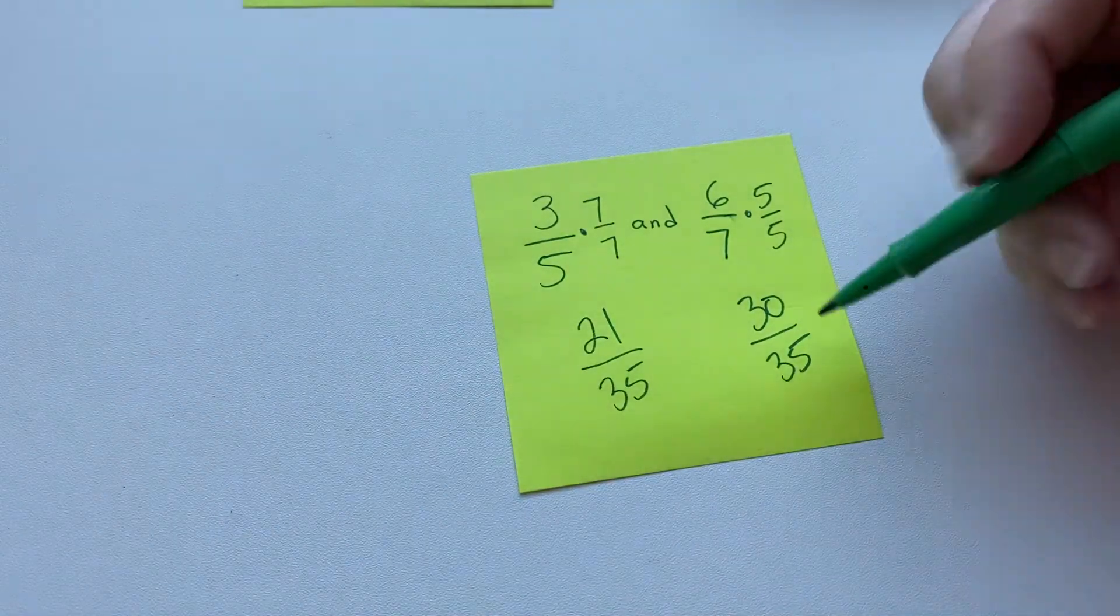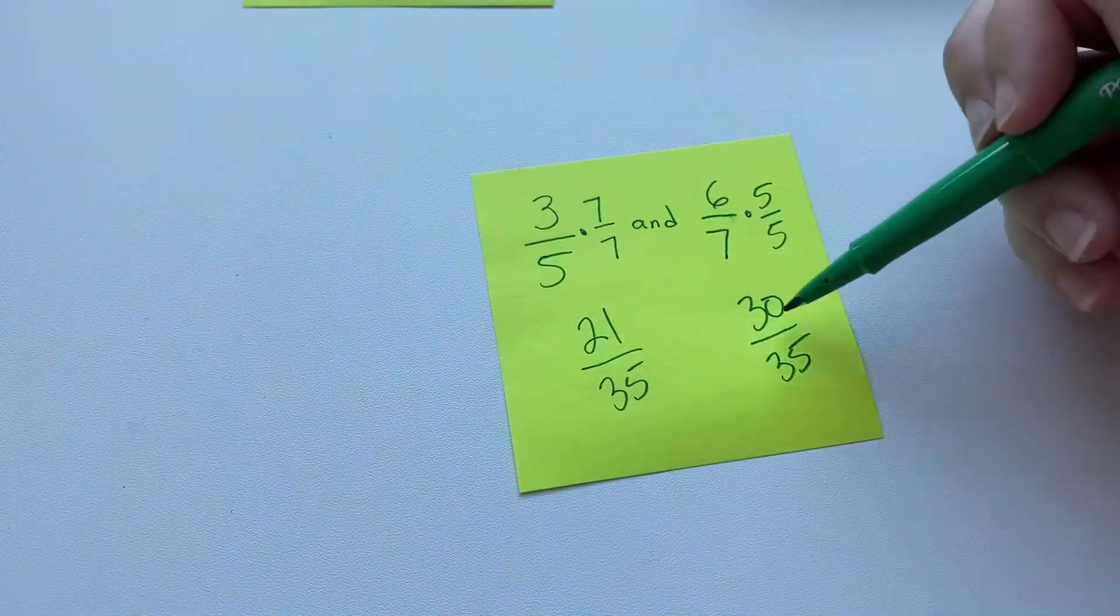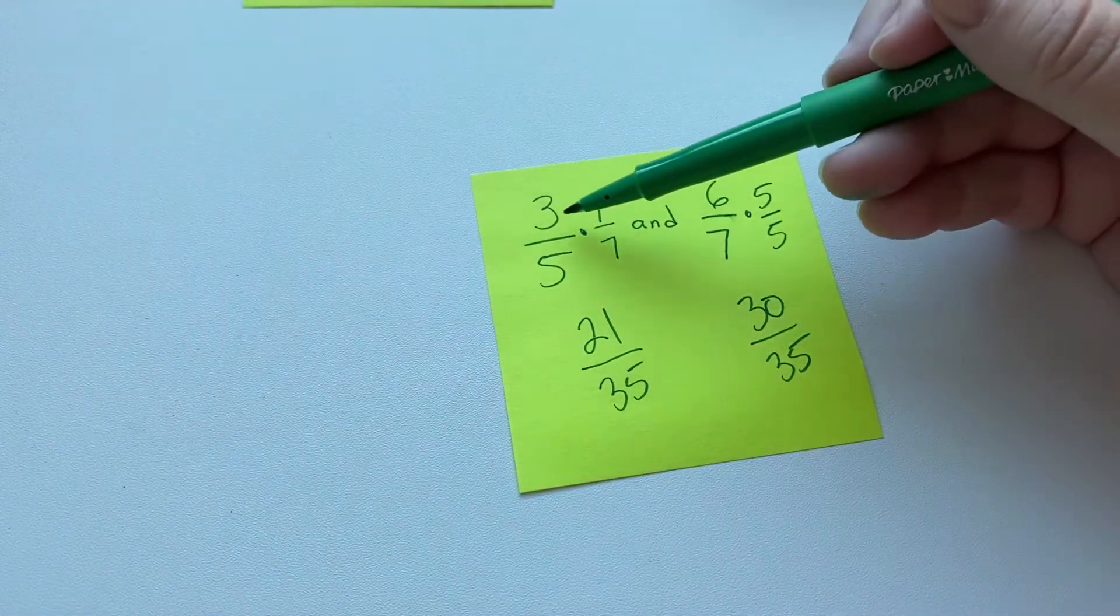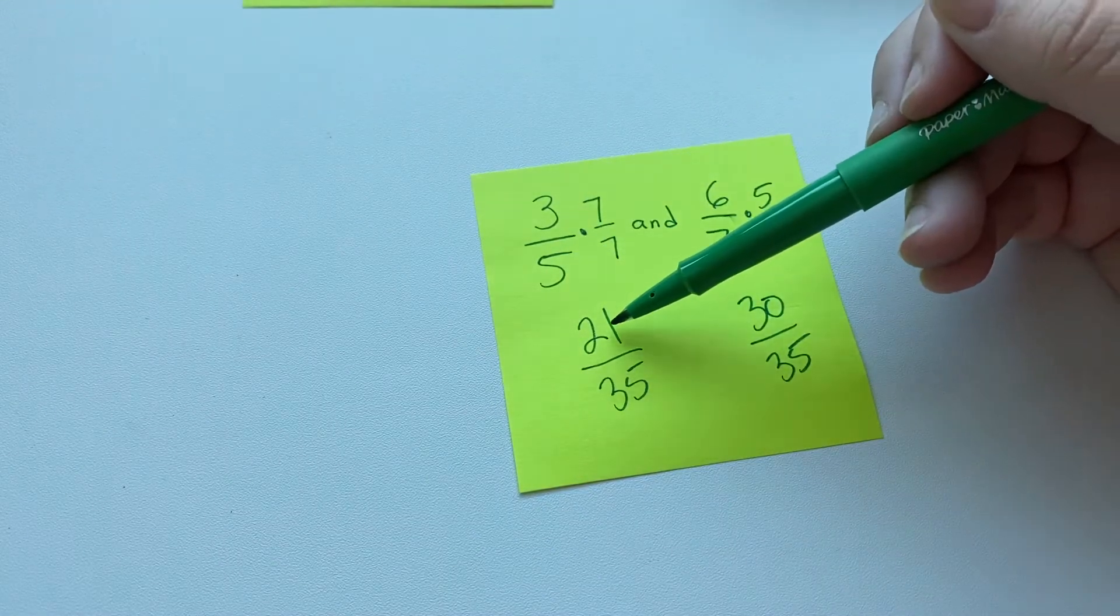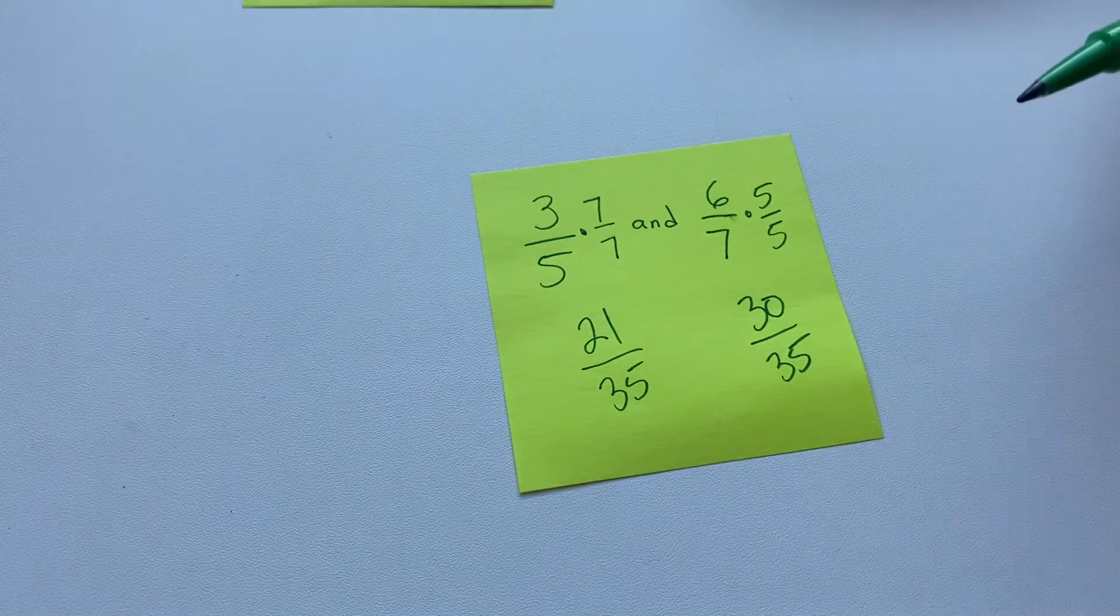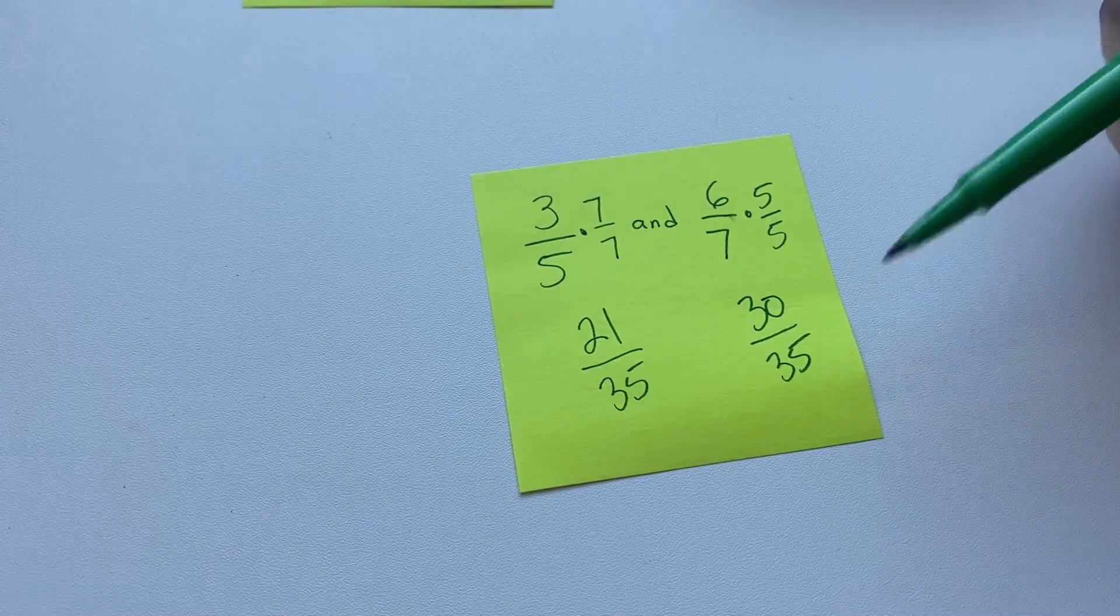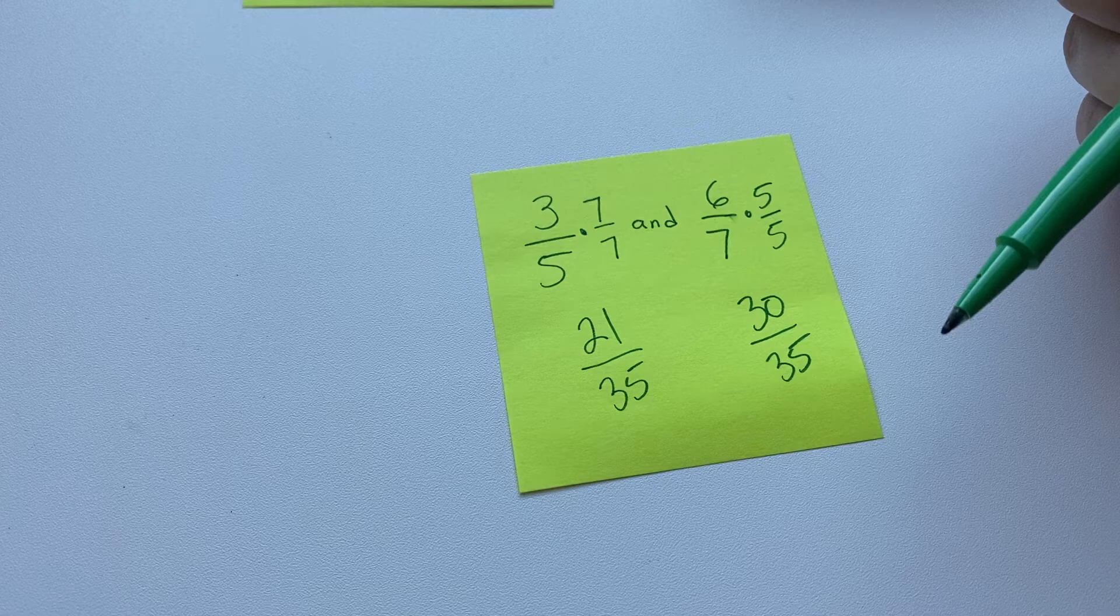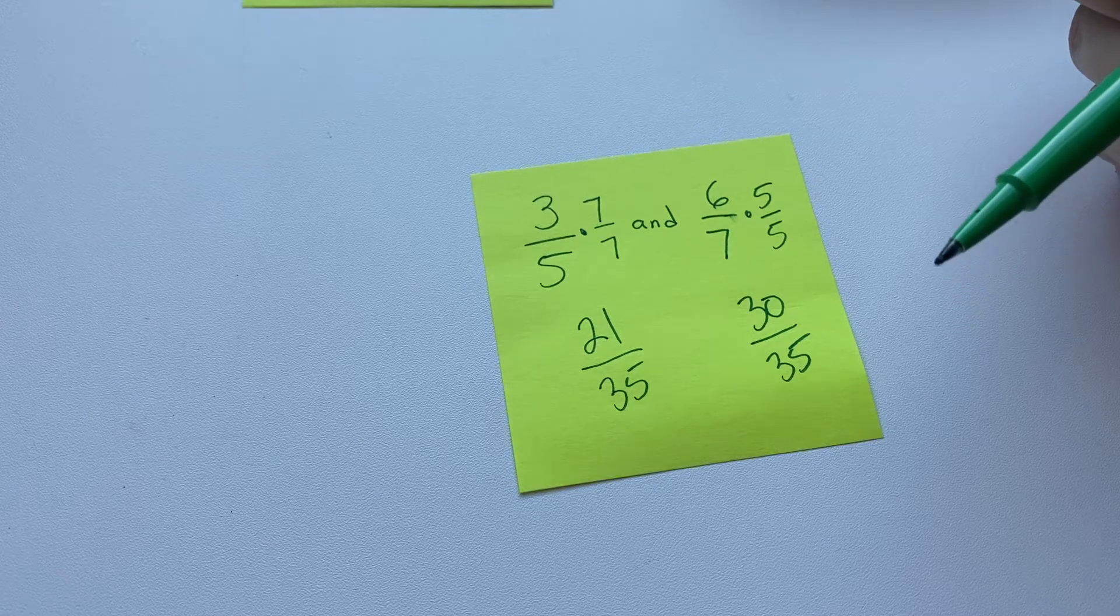So now we have a common denominator. These are equivalent fractions. Three fifths is equal to 21 over 35. And six sevenths is equal to 30 over 35. We didn't change the fraction, we just found a proportional equivalent fraction.